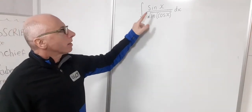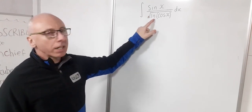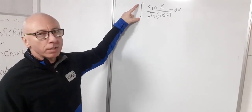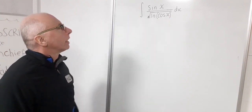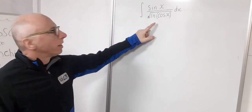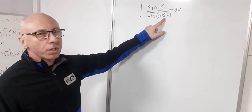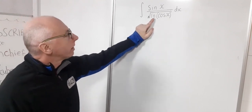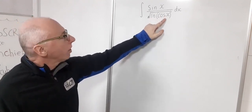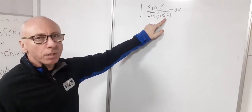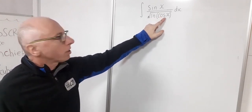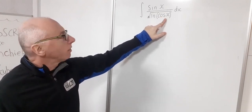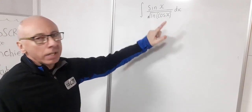We've got an integral: sine of x divided by the square root of the natural log of cosine of x, with respect to x — an indefinite integral with no parameters. We need to be careful because natural log can't take negative numbers, and cosine of x oscillates from minus one to one, so there will be times when the argument is negative, producing imaginary values — that will need to be addressed at the end.